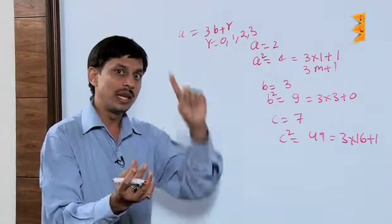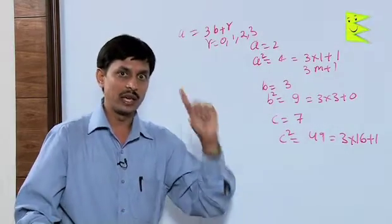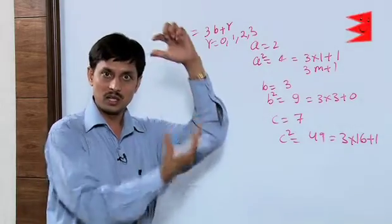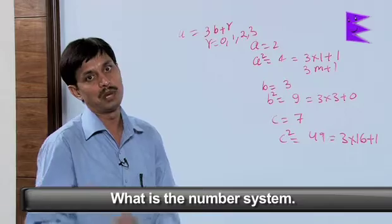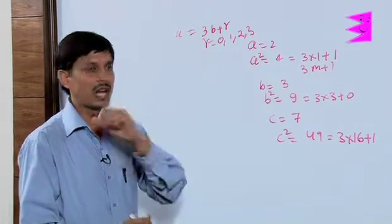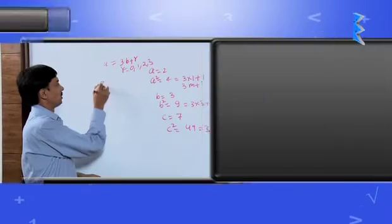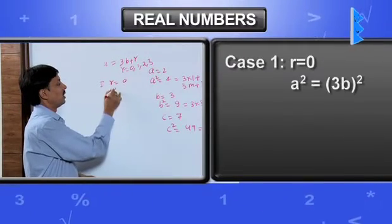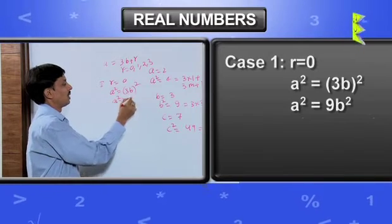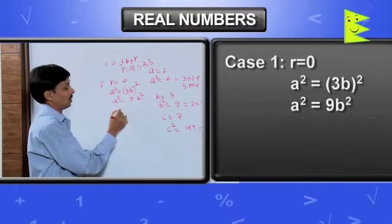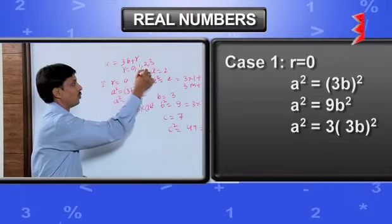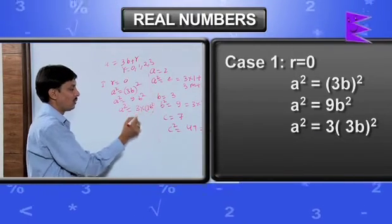We are coming to take case 1, case 2, case 3 and we will find their square and we will try to check whether the square of all these numbers are in the form of 3m plus 0 or 3m plus 1. First, we are taking r equals 0. a square equals 3b whole square. a square becomes 9b square, which is 3 into 3b square, which is clearly of the form 3m.